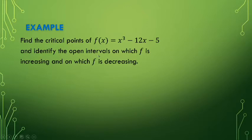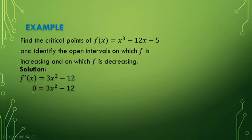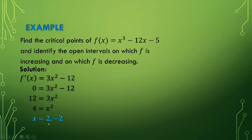Let's find the critical points of f(x) = x³ - 12x - 5 and identify the open intervals on which f is increasing and decreasing. As a solution, to find the critical points, we get the first derivative: f'(x) = 3x² - 12. Now equate this first derivative to 0 to find the critical points where the slope is 0. So 3x² - 12 = 0, transpose -12: 12 = 3x², divide both sides by 3: 4 = x². Therefore x = ±2.